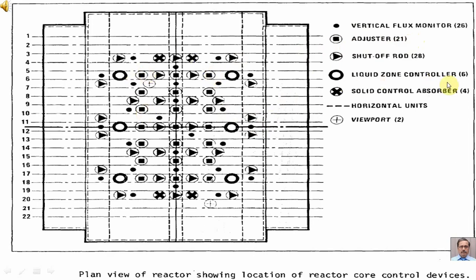Then we have shutoff rods — 28 of them — distributed throughout the reactor core. Liquid zone controllers: 6 of them, located here, here, and here.